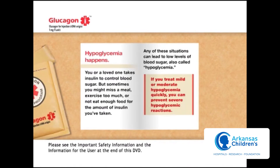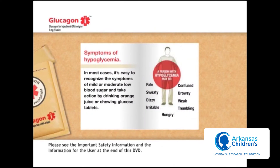Hypoglycemia happens. You or a loved one takes insulin to control blood sugar, but sometimes you might miss a meal, exercise too much, or not eat enough food for the amount of insulin taken. The good news is that if you can treat mild or moderate hypoglycemia quickly, you can often prevent it from getting worse. A person with hypoglycemia may be pale, sweaty, dizzy, irritable, confused, drowsy, weak, trembling, or hungry. Take action by eating or drinking a fast-acting source of sugar like juice, regular soda, or glucose tablets.